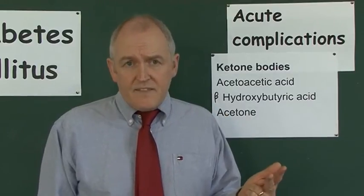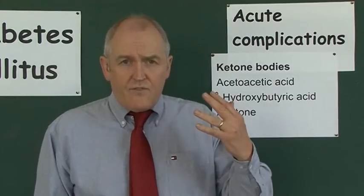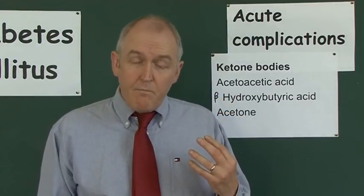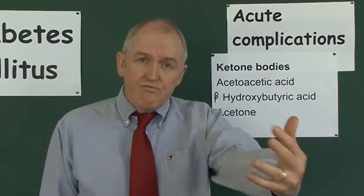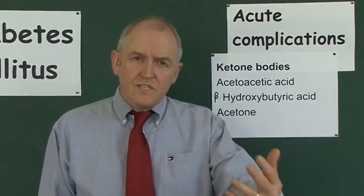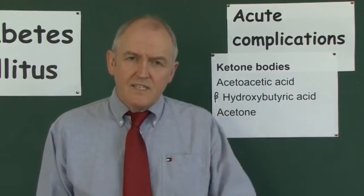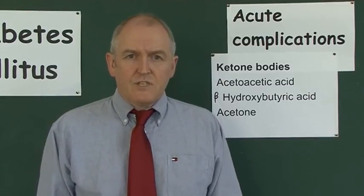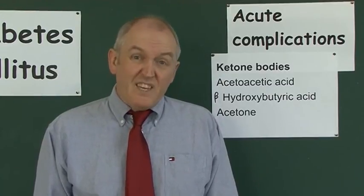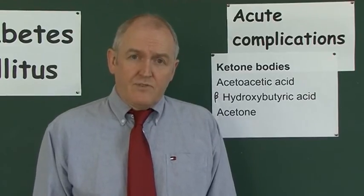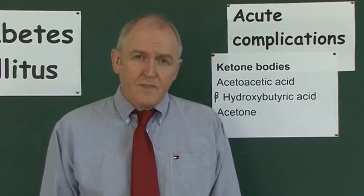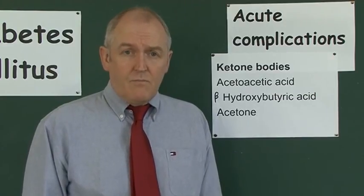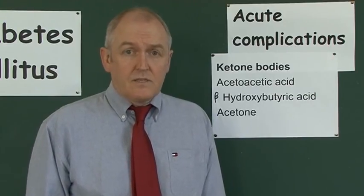The acetone is the volatile fraction, so if you've got ketone bodies in the blood, the acetone is breathed out and we can smell it. It's like a sweet, sickly smell, sometimes described as smelling like pear drops. So those three chemical compounds — acetoacetic acid, beta-hydroxybutyric acid, and acetone — are the ketone bodies.